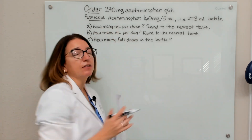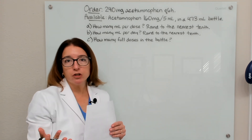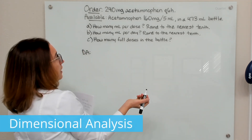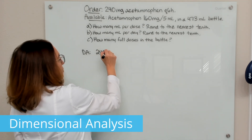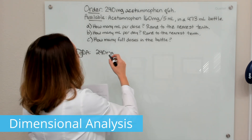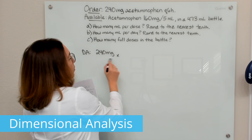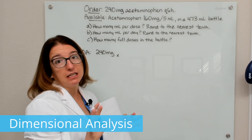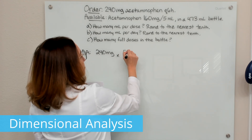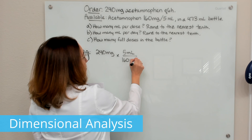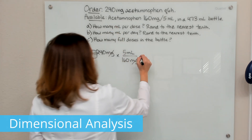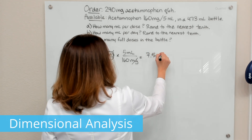We can solve part A using dimensional analysis, ratio and proportion, or the formula method. With dimensional analysis, I start by putting down what is ordered, which is 240 milligrams. I check to see if I need any conversion factor — since both the order and what's available are in milligrams, I don't. Next, I multiply times the concentration, putting milliliters on top and milligrams on bottom, so my milligrams cross off and I'm left with milliliters. Multiplying this out gives 7.5 milliliters.